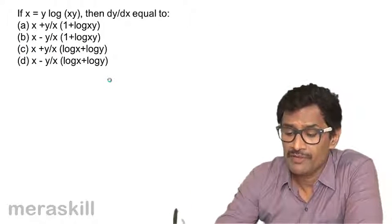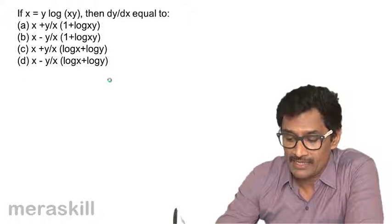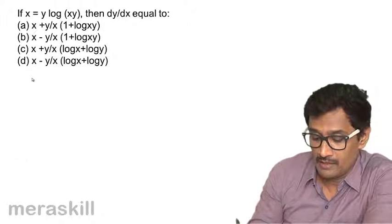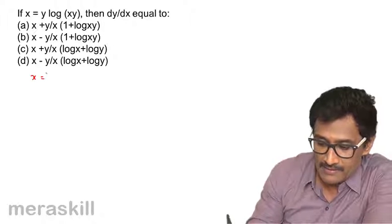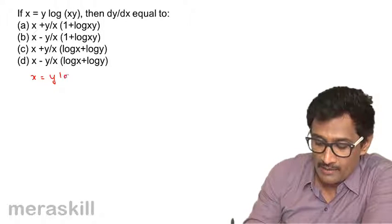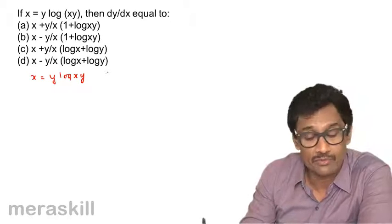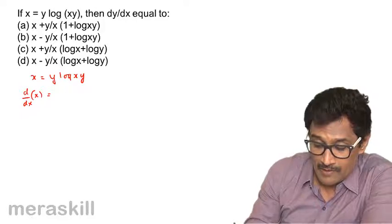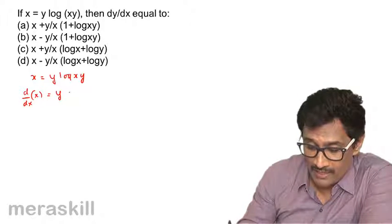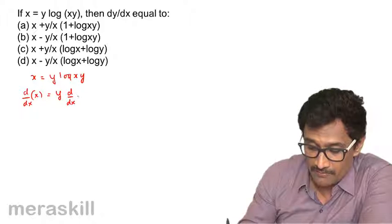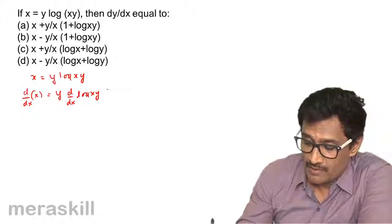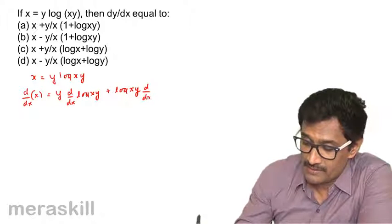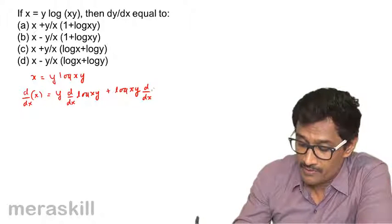Now here we have x = y log(xy), and we need to find dy/dx when x = y. So, x = y log(xy). Take derivatives on both sides: d/dx of x equals d/dx of y log(xy), giving y into d/dx of log(xy) plus log(xy) into d/dx of y.